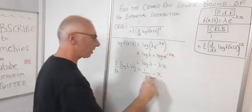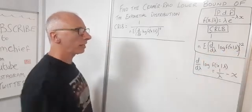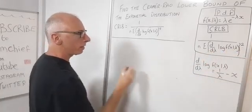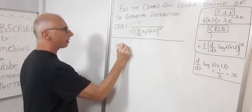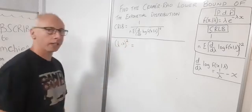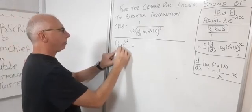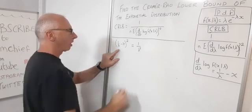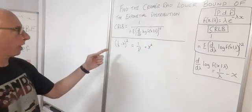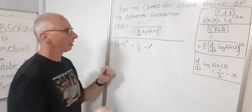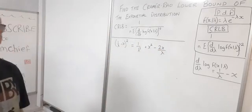Now we need to square this term and take the expected value. Squaring 1/lambda minus x: we get 1/lambda squared as the first term, minus x squared gives us plus x squared, and the cross term gives us 2 times minus x times 1/lambda, which is minus 2x/lambda.